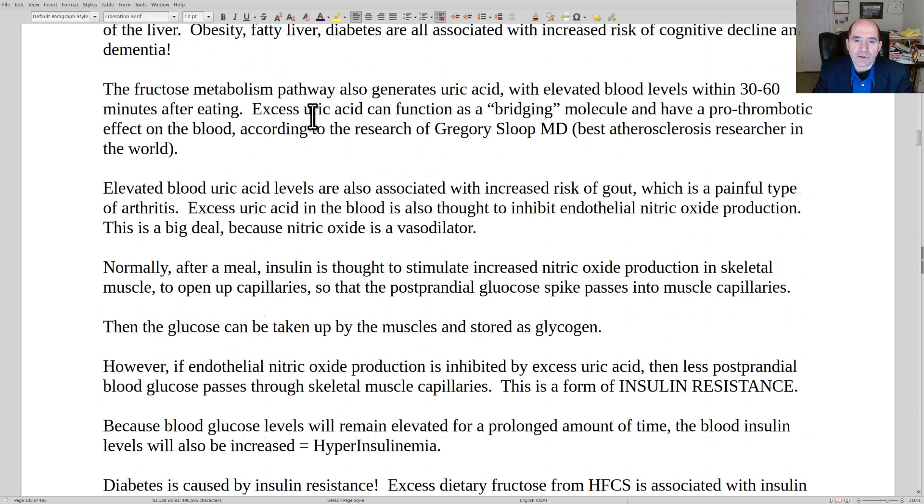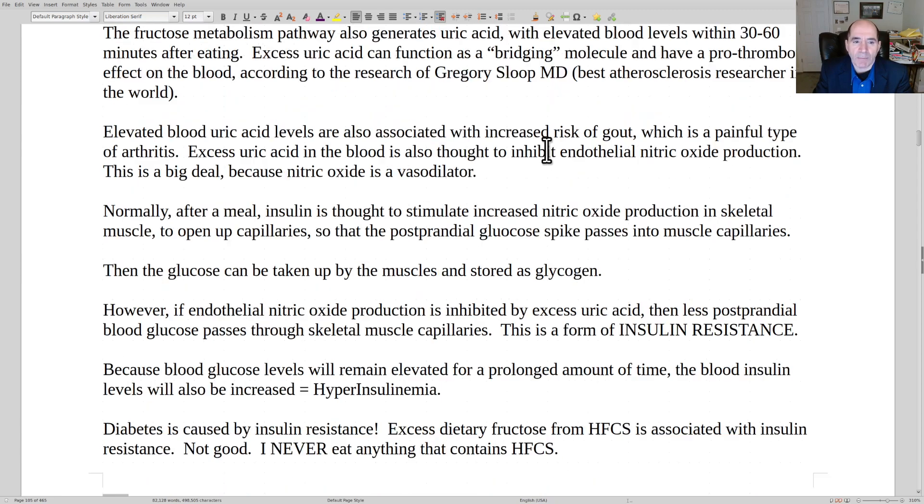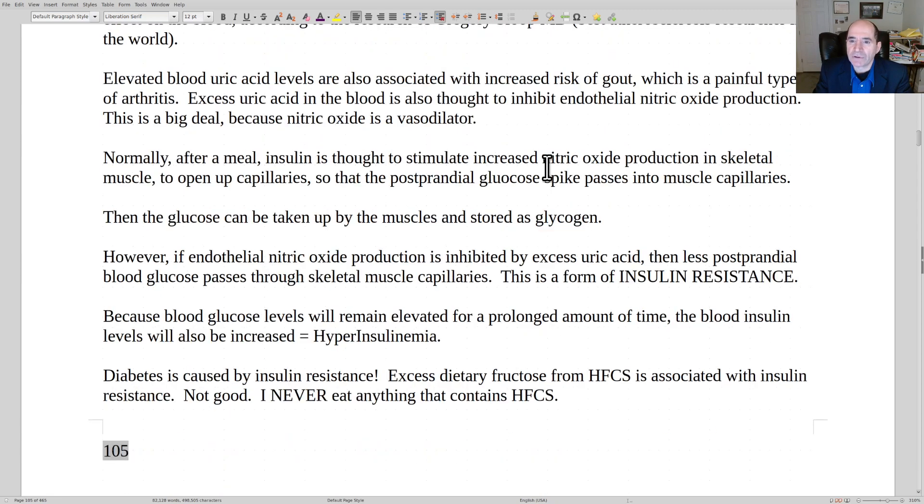I told you that excess uric acid can function as a bridging molecule, sticking the red blood cells together, overcoming the zeta potential. Thus, it has a prothrombotic effect. We talked about it inhibiting endothelial nitric oxide being a vasoconstrictor. When the levels get real high, they can also cause gout, a type of painful inflammatory arthritis.